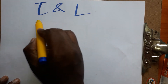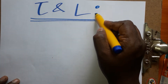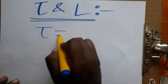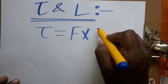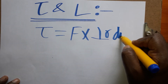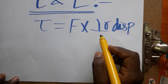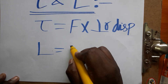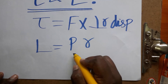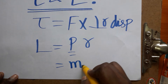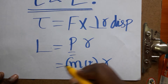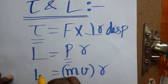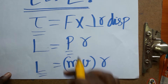Today we are going to learn the relation between torque and angular momentum. In rotational motion, torque is equal to force times perpendicular distance. Angular momentum is linear momentum times radius, where linear momentum is mass times velocity, so angular momentum L equals mvr.